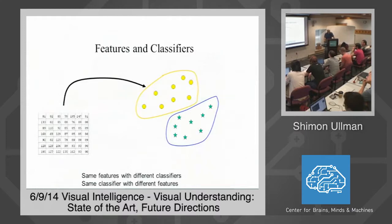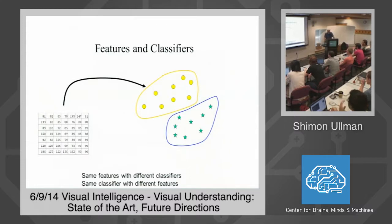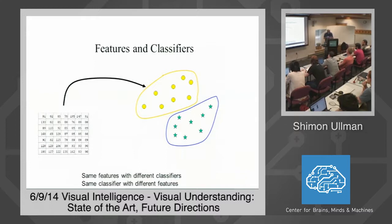There is a conceptual divide in the whole stream of doing classification: between producing features for classification and then using those features to reach a decision. It's a real divide — you can use the same features in different classifiers and see which is best, or use a single classifier like SVM and try it with different features. The challenge has been finding good features for the task and the optimal way of combining them. This has been a main challenge in the field for many years.